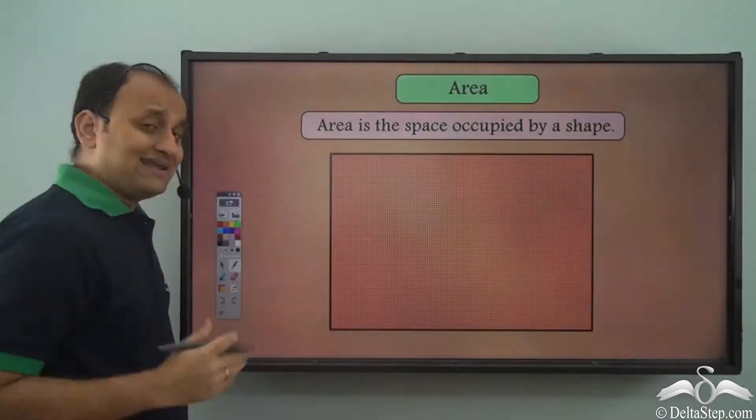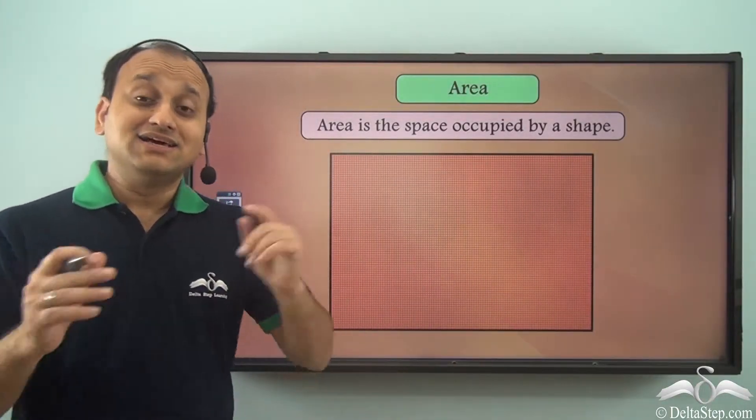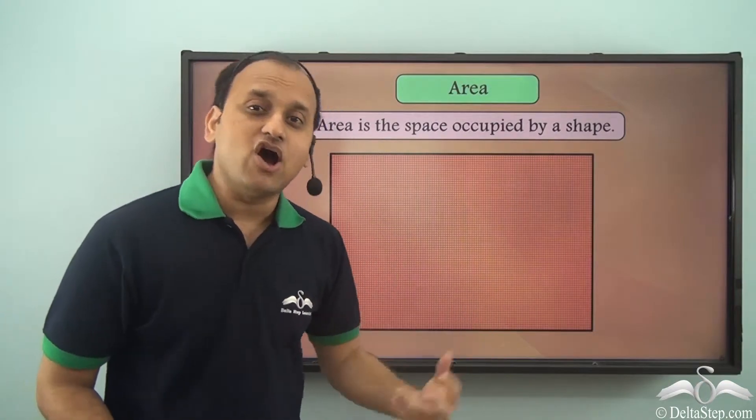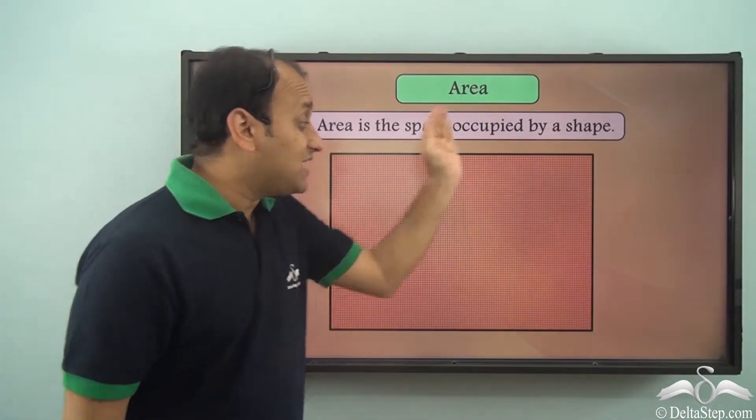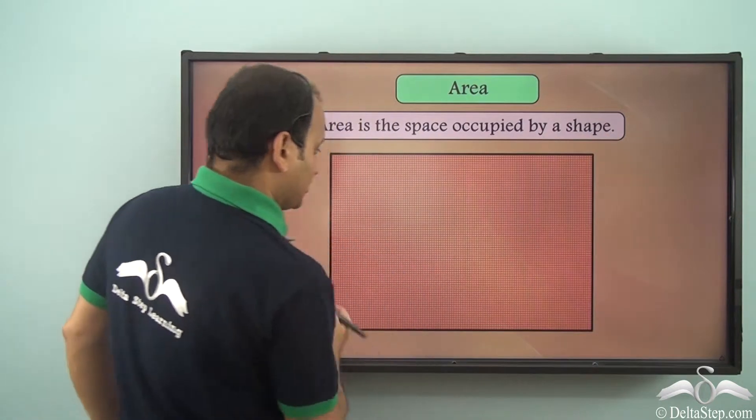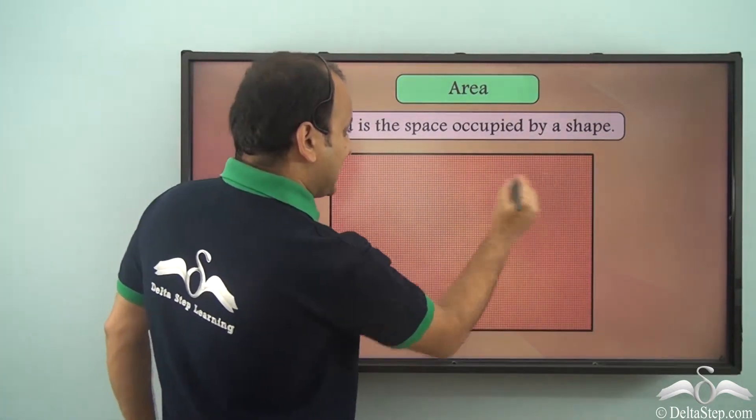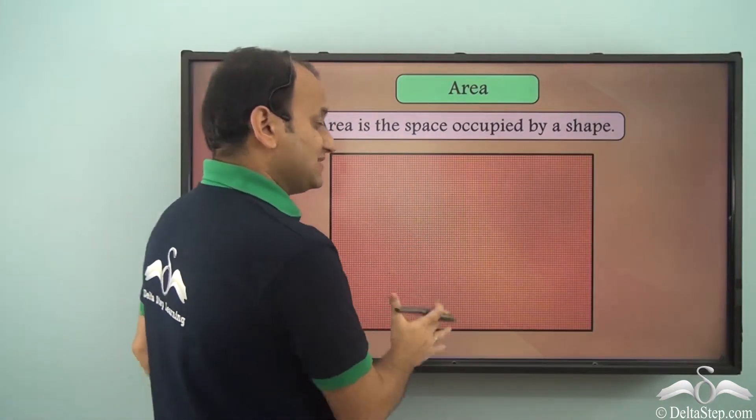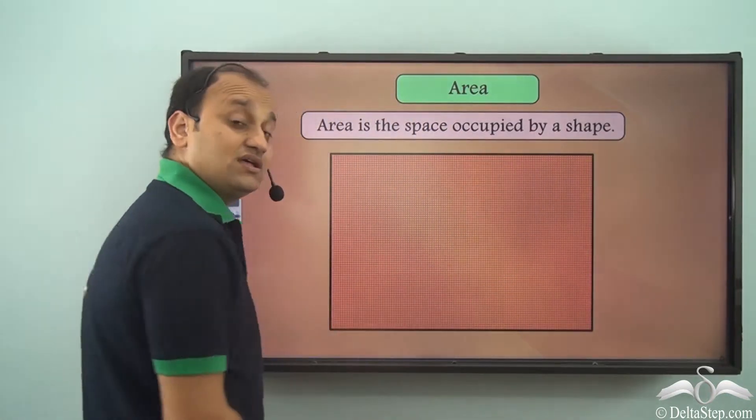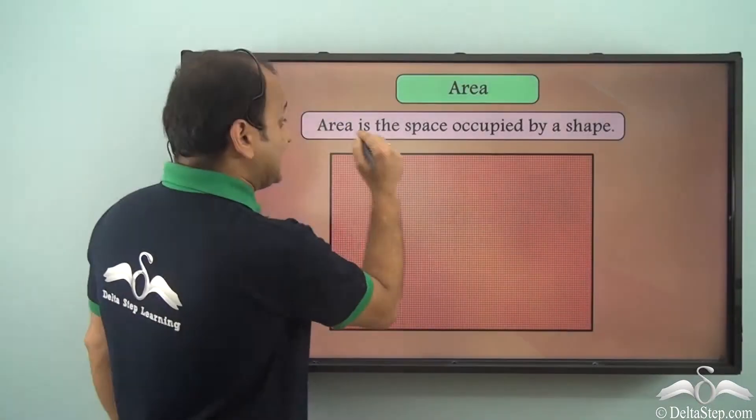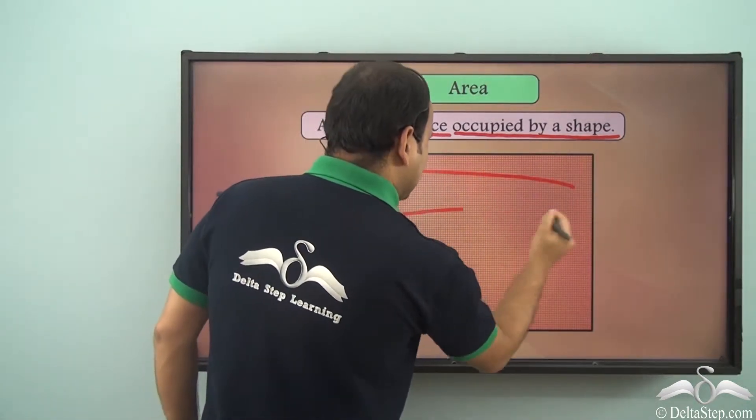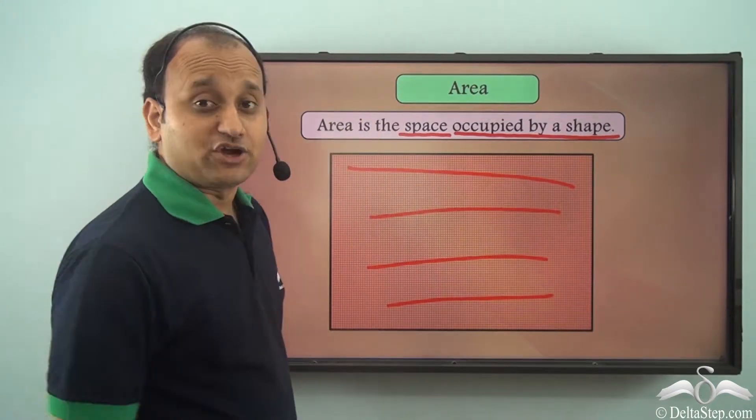Now in order to find the space occupied by the wall, Sam needs to find the area of the wall. So space occupied by any shape is the area of that shape. If I have this particular shape, this entire shaded region here is the space occupied by the shape, or we can say this entire region is the area of the shape. So area is the space occupied by a shape.